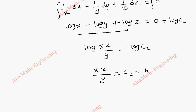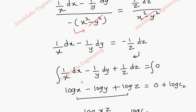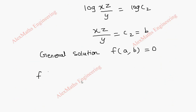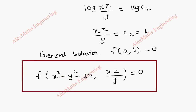After getting a and b, we can write the general solution. The general solution is f(a, b) = 0, where a = x² − y² − 2z and b = xz/y. So the solution is f(x² − y² − 2z, xz/y) = 0. We got the solution for the given partial differential equation using the Lagrange's multiplier method.